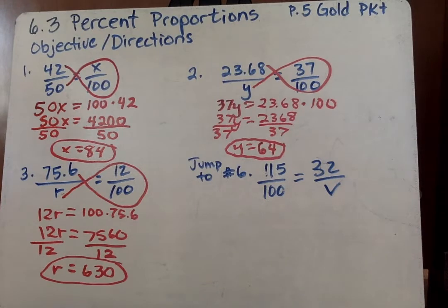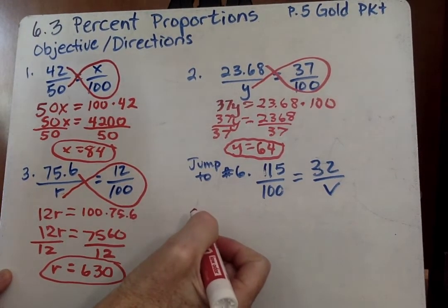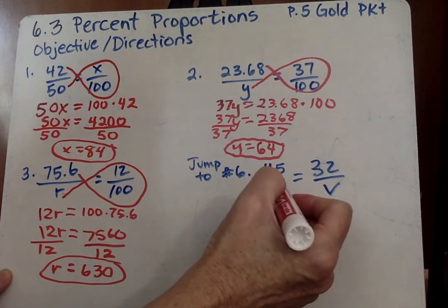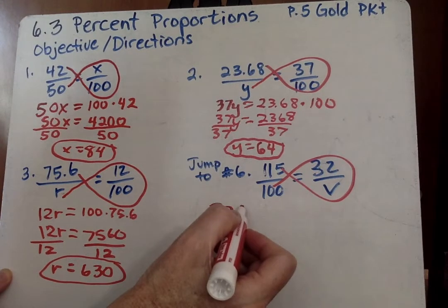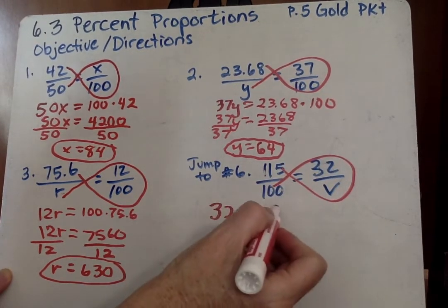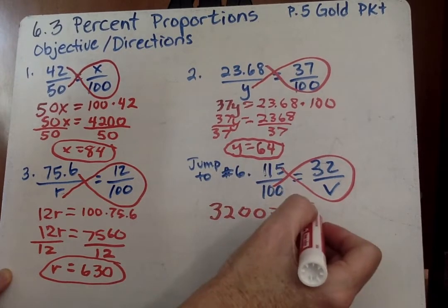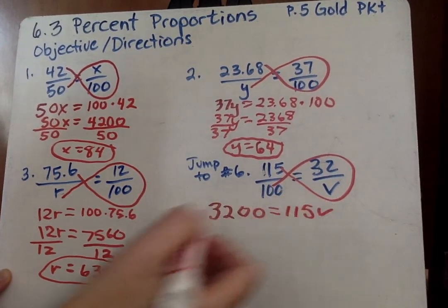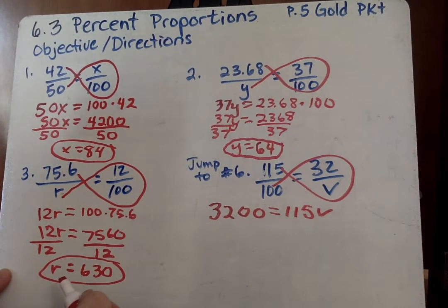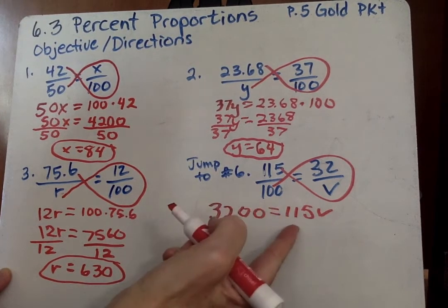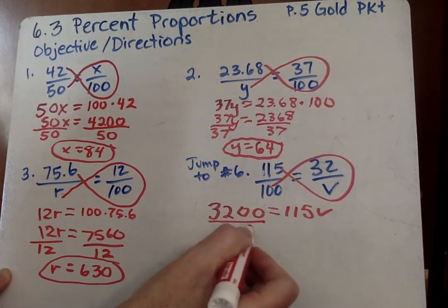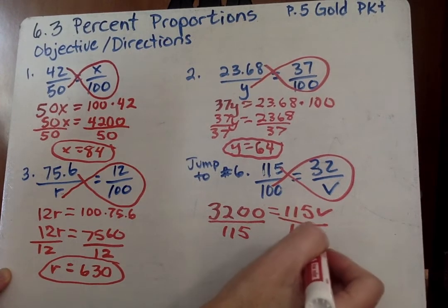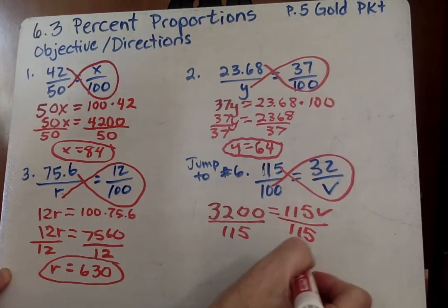The rest don't look too challenging. They all look pretty easy. I will go ahead and do number 6. So you can jump to number 6 from number 3. And I'm going to draw my fish. 100 times 32 is 3200 equals 115 times V. Now, we do not divide by 3200. You must divide by whatever's in front of the variable. Here's our variable. So we divide by 115.